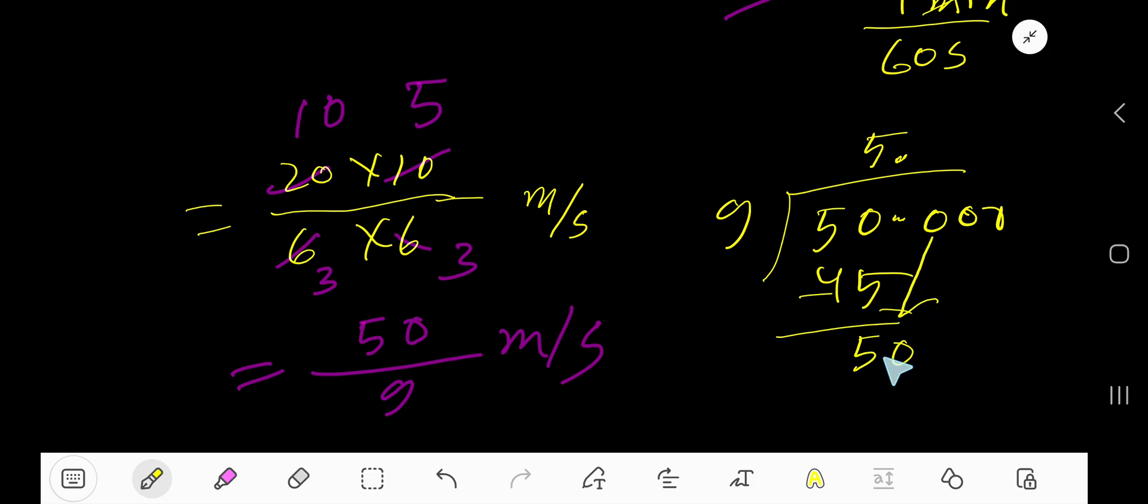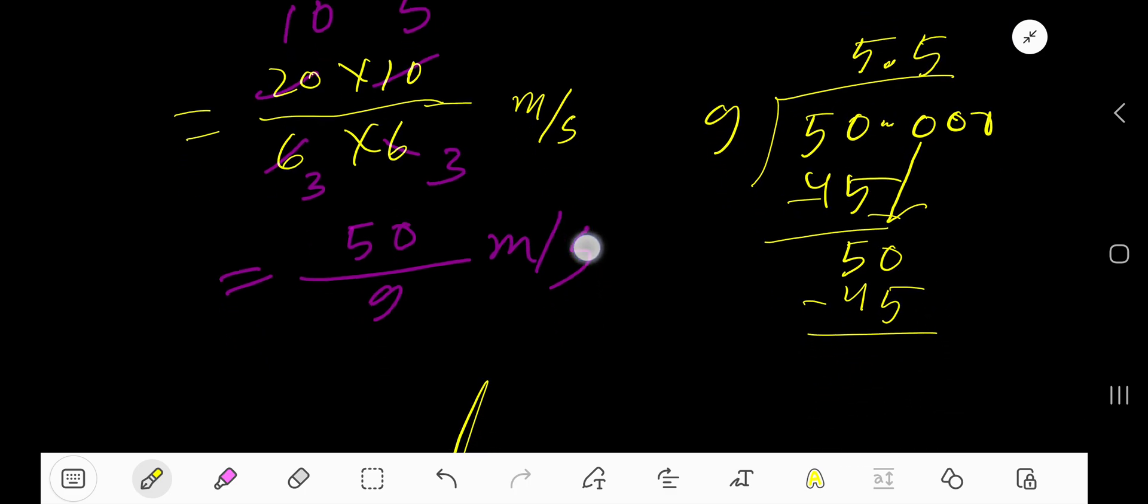9 goes into 50, 5 times. 5 times 5 is 45. Subtract, you are getting 5. Bring down next 0.